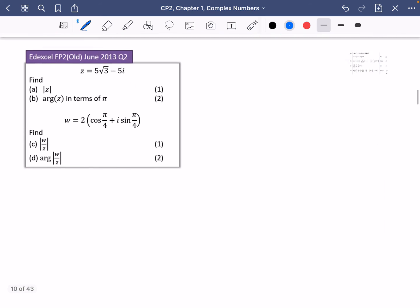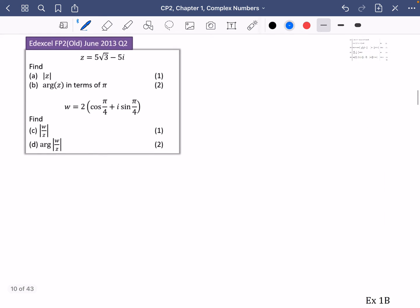So there's an exam style question here that we can have a quick look at. And then you're going to be able to do enough of exercise 1B. So you might like to pause the video, have a go at this. So I'm going to go through this one in just a second. So nice and easy. Part A of the question says find the modulus of z. So the modulus of z is just going to be the square root of 5 root 3 squared plus 5 squared. Well, 5 root 3 squared is 75, 5 squared is 25. So the answer to this is that the modulus of z is 10.